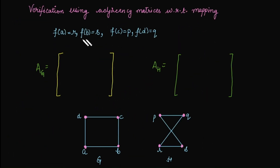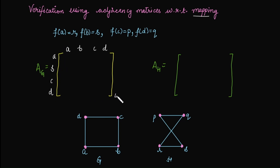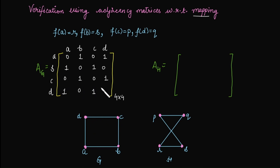Once the mapping is built, we verify it by constructing the adjacency matrix for both graphs. For graph G, with vertex ordering A, B, C, D — the matrix is 4×4. A is adjacent with B and D, so those entries are 1 and the rest are 0. B is adjacent with C and A, so those entries are 1. The remaining entries are filled in accordingly. This gives us the adjacency matrix for graph G.